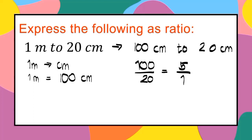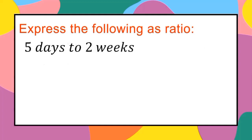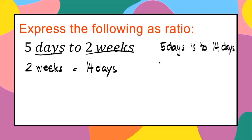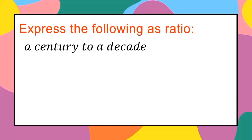Next, we have 5 days to 2 weeks. It is easier to convert the larger unit to a smaller unit, so we convert 2 weeks to days. There are 14 days in 2 weeks. So 5 days to 14 days — since they are now of equal unit of measure, we can express this as a ratio: 5 over 14, or 5 is to 14.